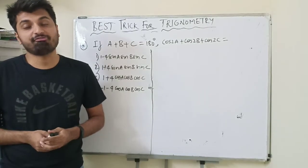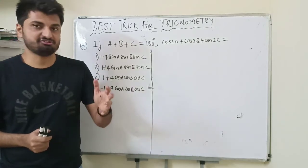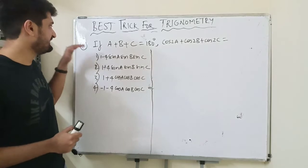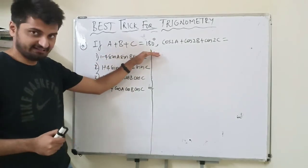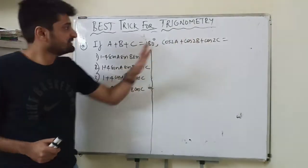Welcome to another video on trigonometry. Let us look at a question on transformations. The question is as follows: if a plus b plus c equals 180 degrees, then find the value of cos2a plus cos2b plus cos2c.